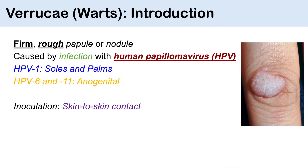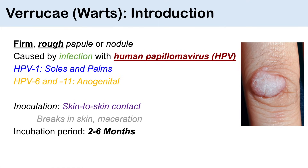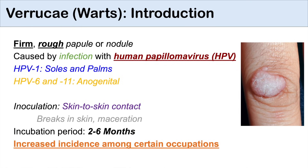Infection with HPV occurs through inoculation or skin-to-skin contact, and that can occur in breaks in the skin, macerated skin, or any areas of weakness where the skin comes into contact with the HPV virus. Once that occurs, it takes some time for a proliferative state of skin cells to form the wart — generally about two to six months. Interestingly, there's an increased incidence of warts among certain occupations, including handlers of fish, chicken or poultry, and meat.